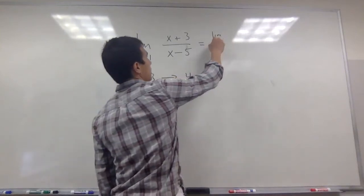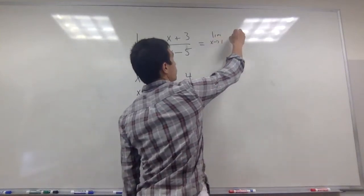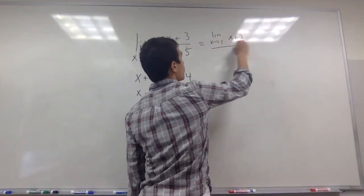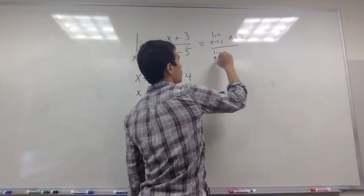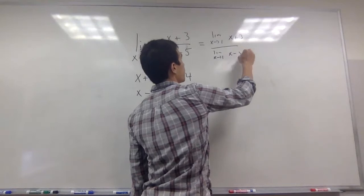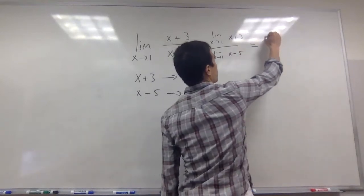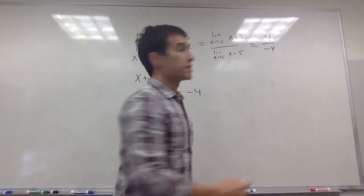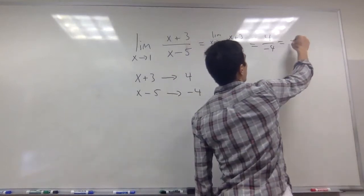So I can use the limit laws and say that this is going to be the limit as x goes to 1 of x plus 3 divided by the limit as x goes to 1 of x minus 5. And this is just 4 divided by negative 4. So this limit is going to be negative 1.